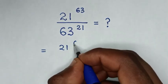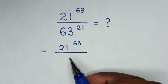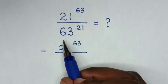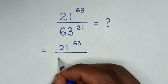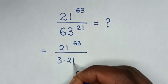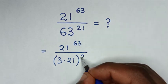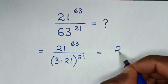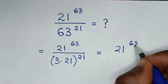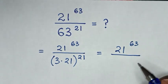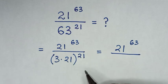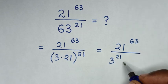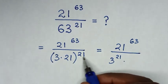This 63 we make to have common power of 21. So 63 is same as 3 times 21, then bracket power of 21. Then it will be equal to 21 power of 63 divided by — we take this power of 21 inside the bracket — so it will be 3 power of 21 times 21 power of 21.